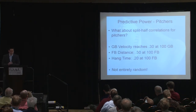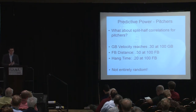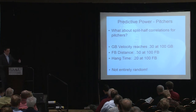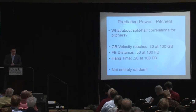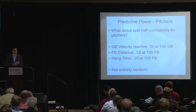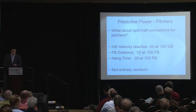For pitchers, we ran similar split-half correlations. The correlation exists but is not nearly as strong as it is for hitters. Of ground ball velocity, fly ball distance, and hang time, only one of the three reaches stability over the course of a season at 100 fly balls. We shouldn't fully assume balls in play are completely random for pitchers, but the consistency is much less.